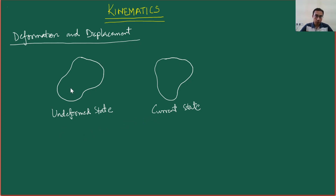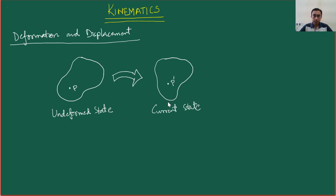In order to precisely and mathematically describe the deformation, what we are going to consider is a generic point within this body, denoted by the capital letter P. Correspondingly, when this body deforms from the undeformed to the current state — depicted by this arrow — the material point P will end up here in the current state, depicted by the letter P-prime. This represents the position of the same material point in the current configuration. In order to mathematically describe this, we need first of all to set up our coordinate axes.